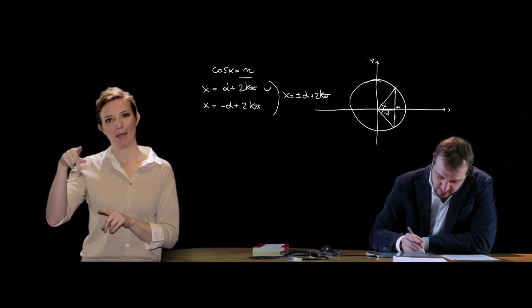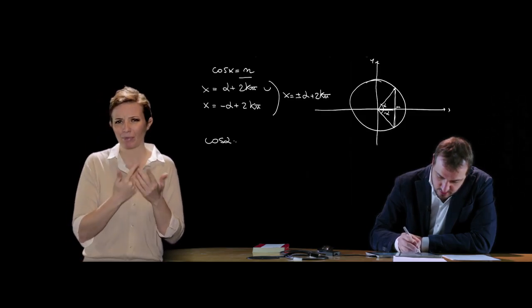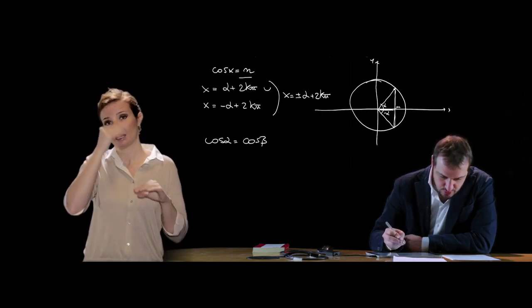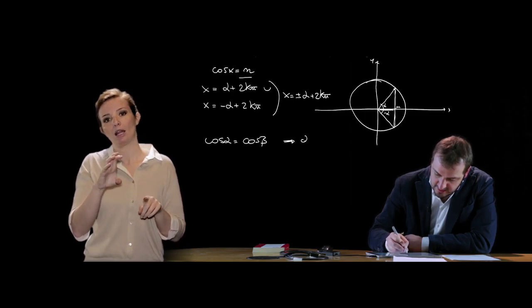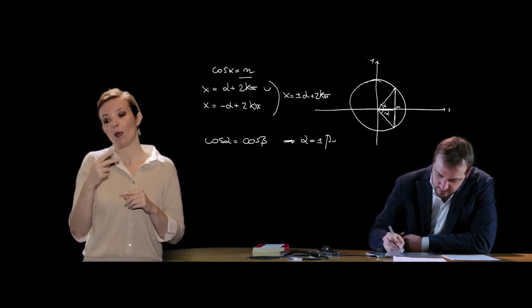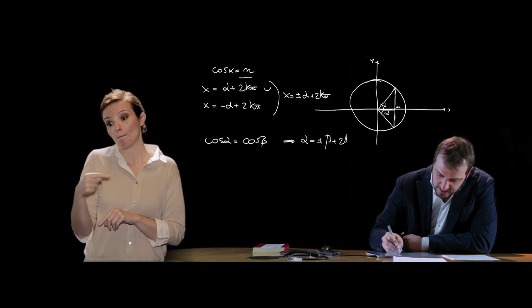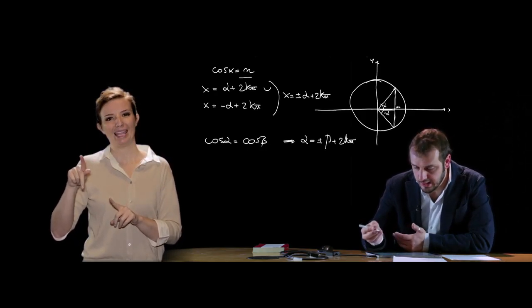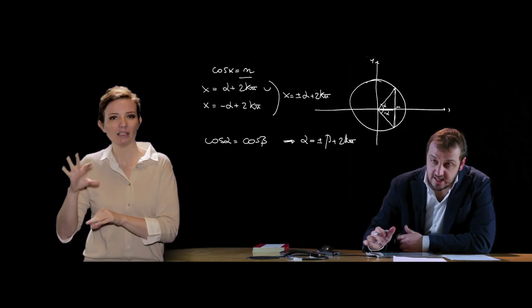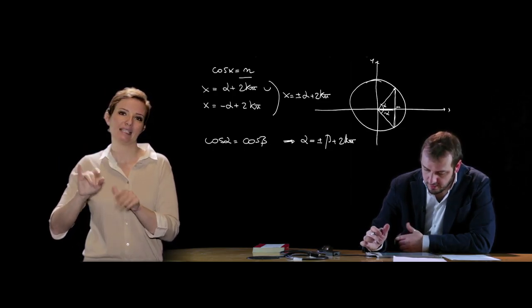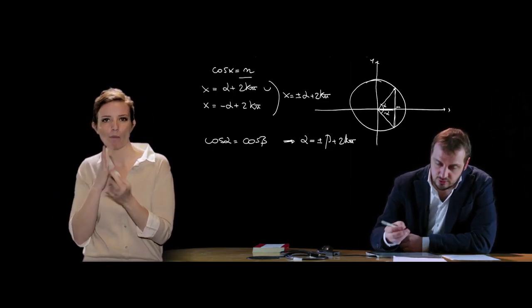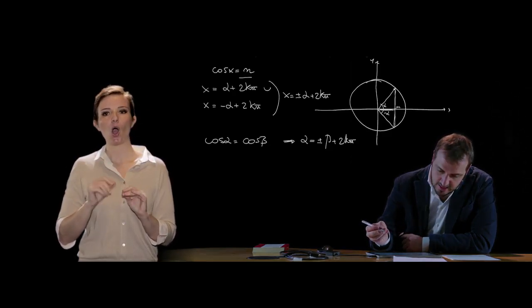Analogamente a quanto fatto per il seno, se avessimo cos α = cos β, le soluzioni si trovano con α = ±β + 2kπ. Il termine 2kπ può essere espresso anche come k·360°, a seconda che si voglia esprimere l'angolo in radianti o nel sistema sessagesimale.